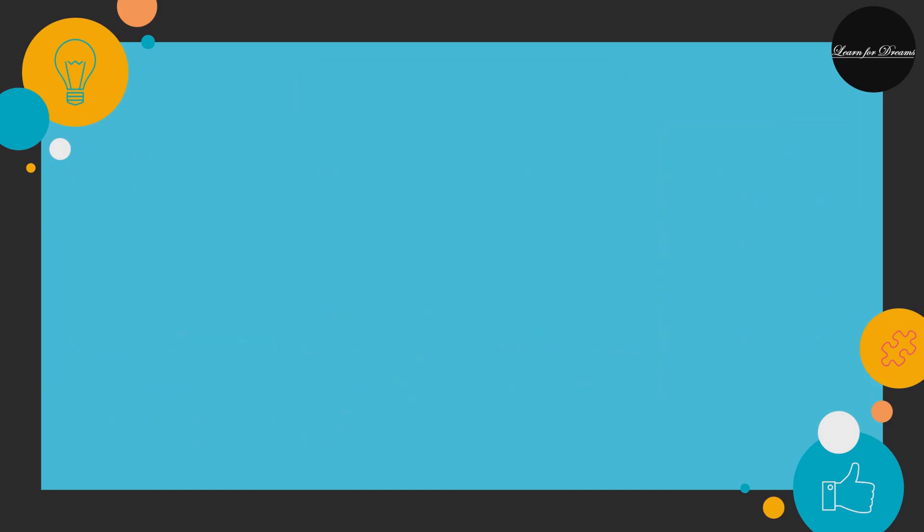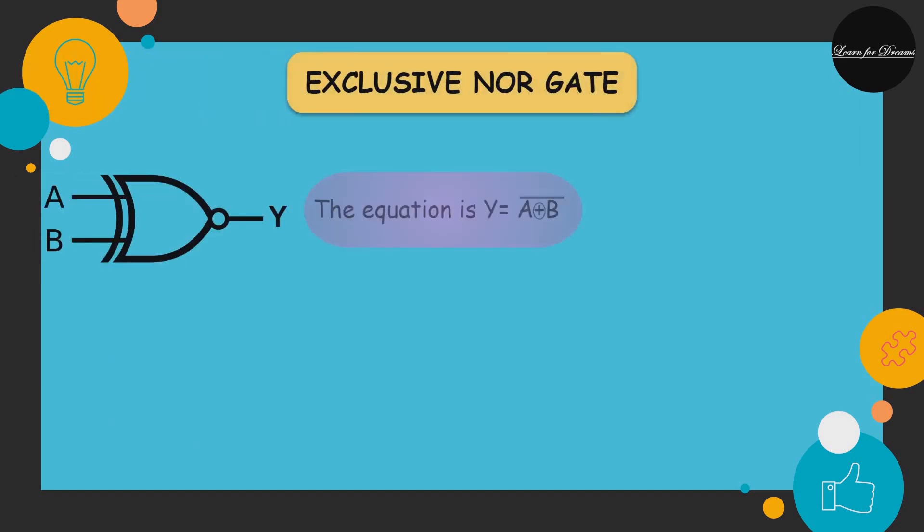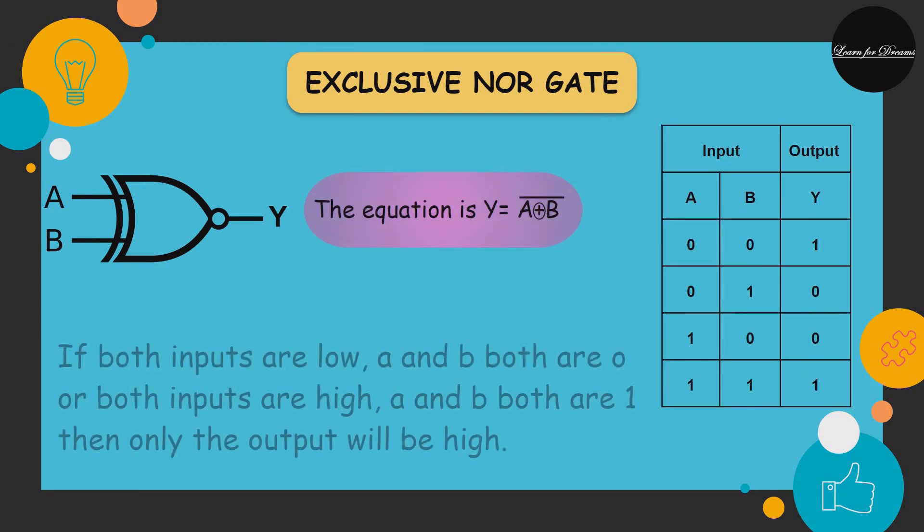Now the seventh one and the last gate, EXCLUSIVE NOR gate. If both inputs are low, meaning A and B both are 0, or if both inputs are high, meaning A and B both are 1, then the output will be high. Otherwise, the output will be low.